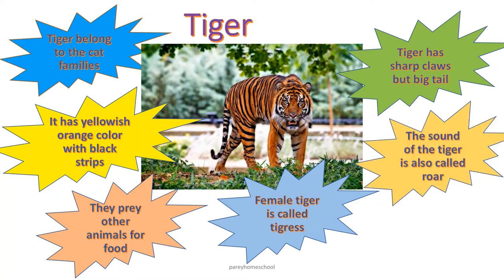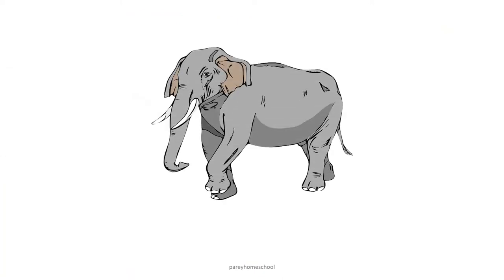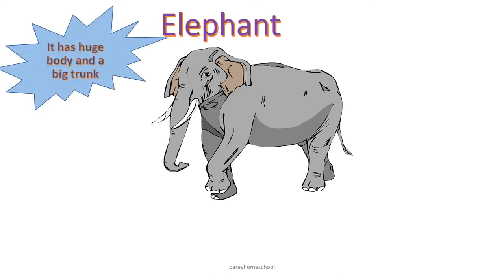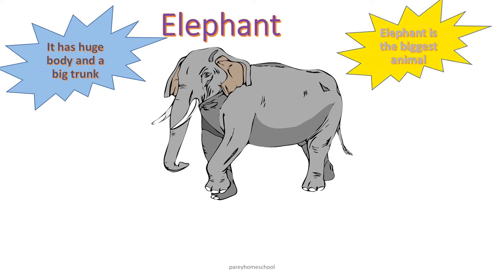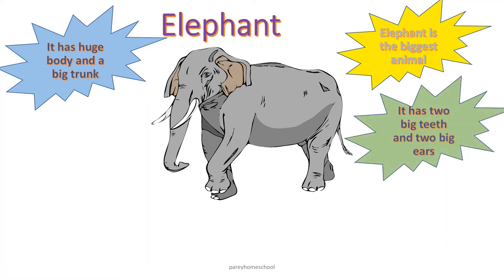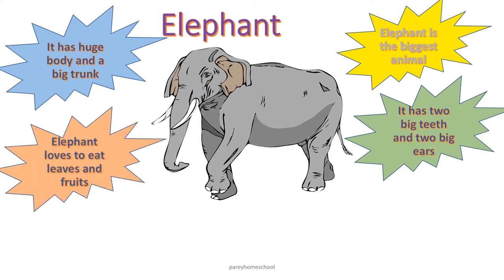The sound of the tiger is also called roar. Can you guess which animal is this? This is elephant. Elephant has a huge body and a big trunk. Elephant is the biggest animal in the forest. It has two big teeth and two big ears.